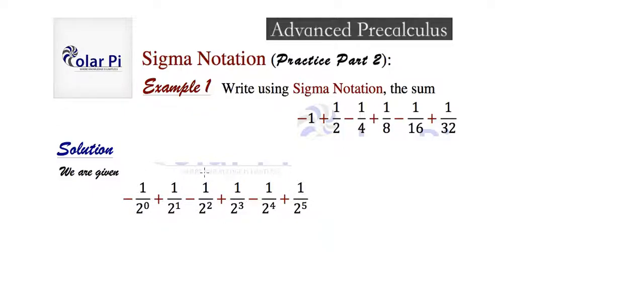But once you get here, it's pretty clear that inside of sigma, you need to have something like one over two to the k. And if you chose one over two to the k, as opposed to, say, one over two to the k plus one, or something fancier, if you went this simpler route, then you know that you have to start with k equals zero, and then end at k equals five, so that to start, you have one over two to the zero, and then to end, you have one over two to the five.